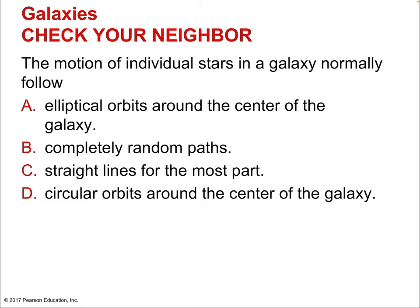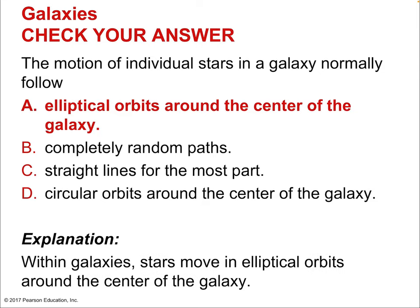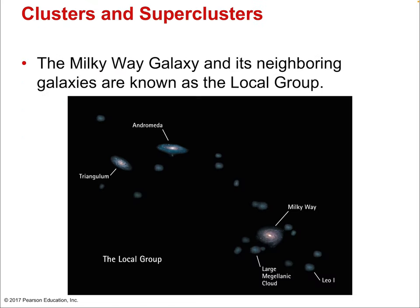The motion of individual stars in a galaxy follows elliptical orbits around the center — and a circle is just a special case of an ellipse with zero eccentricity, so elliptical is the more encompassing term. The Milky Way and its neighboring galaxies form what's known as the local group — a cluster we know quite a bit about because it's close by and easy to study.